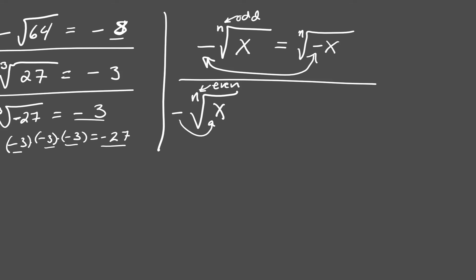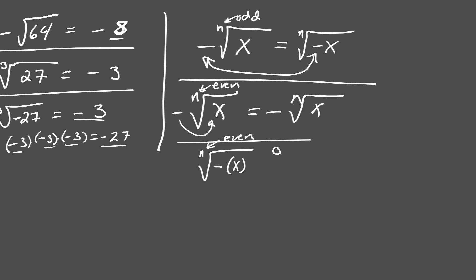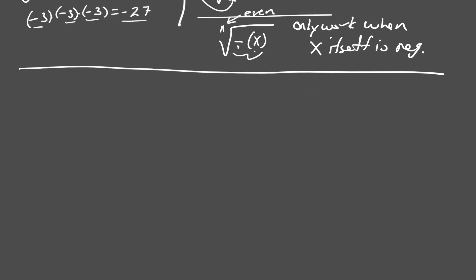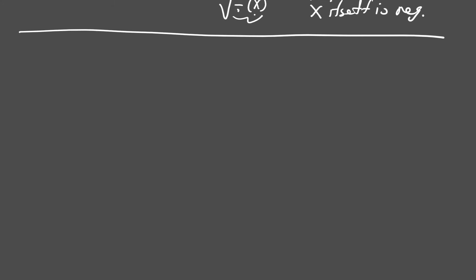So this negative sign just sticks around — the only way you can keep that negative sign around is to write it the exact same way. And if I have a negative on the inside with an even power, this only works when x itself is negative, so that the two negatives cancel each other out and I'm taking an even root of something positive. So I can only take even roots of positive things. That leads me into finding domains — just like with rational expressions where we can't divide by zero and have to avoid those values, we have similar issues with radicals.